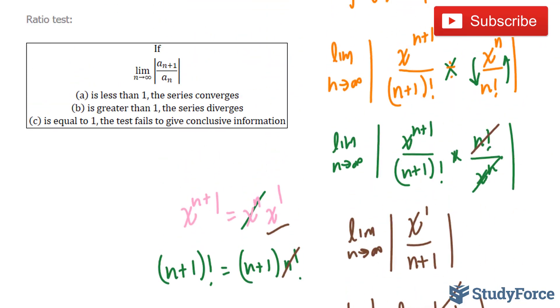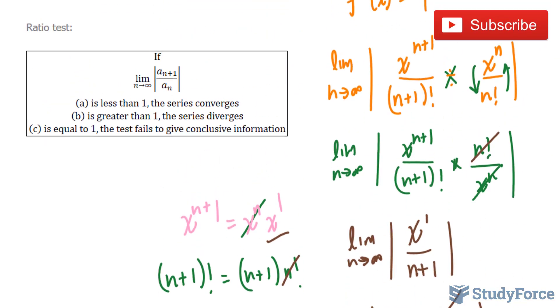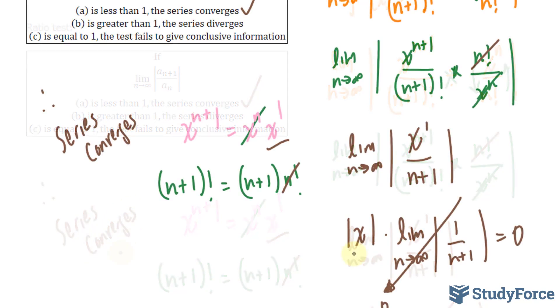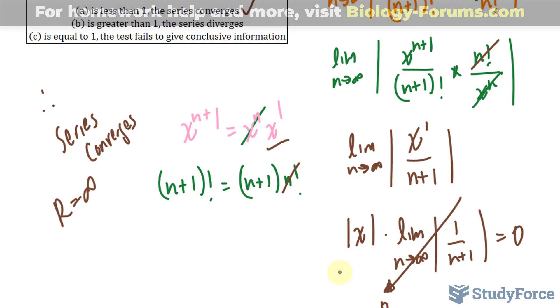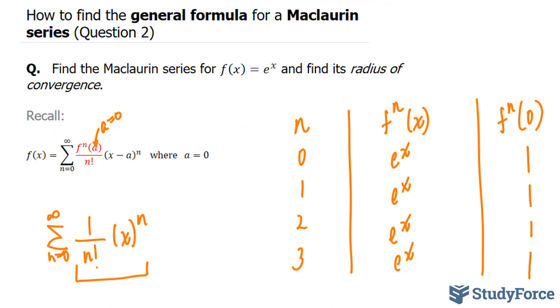Now according to the ratio test, if your answer is less than 1, the series converges. Therefore we can conclude that the series here converges. And since that's the case, the radius of convergence is infinity. Normally you would have a number being added or subtracted to x, and you can solve for x in that case, but that's not the case here. And so there you have it. That is how to find the general formula for Maclaurin series.